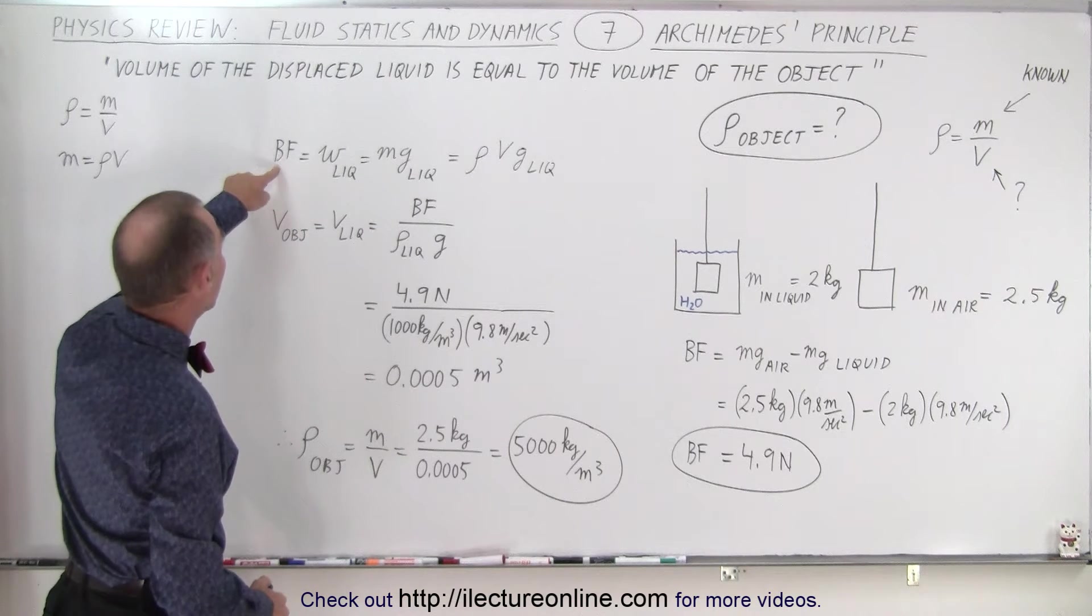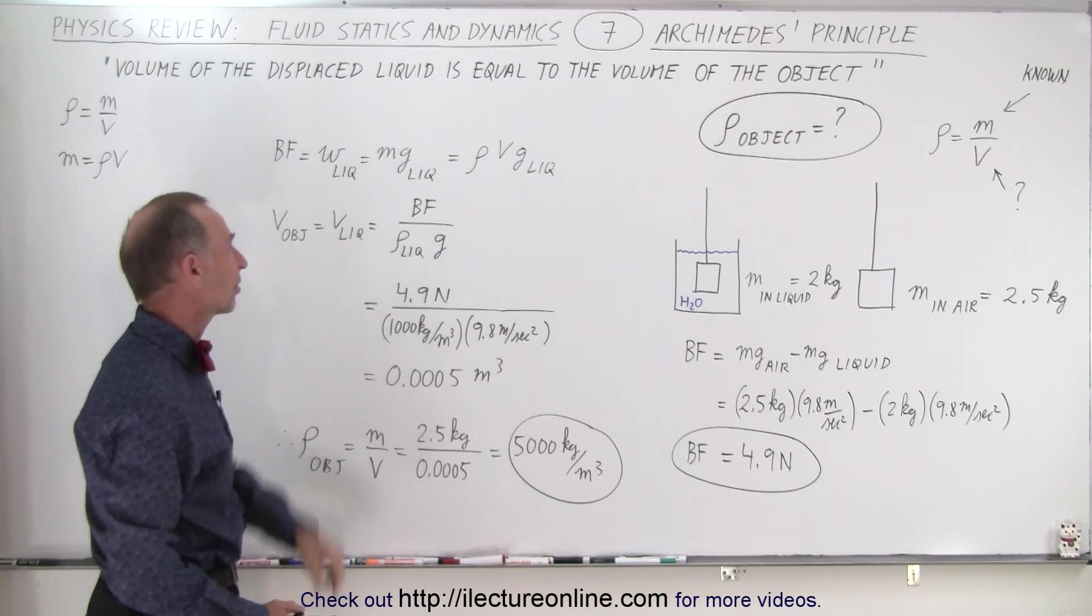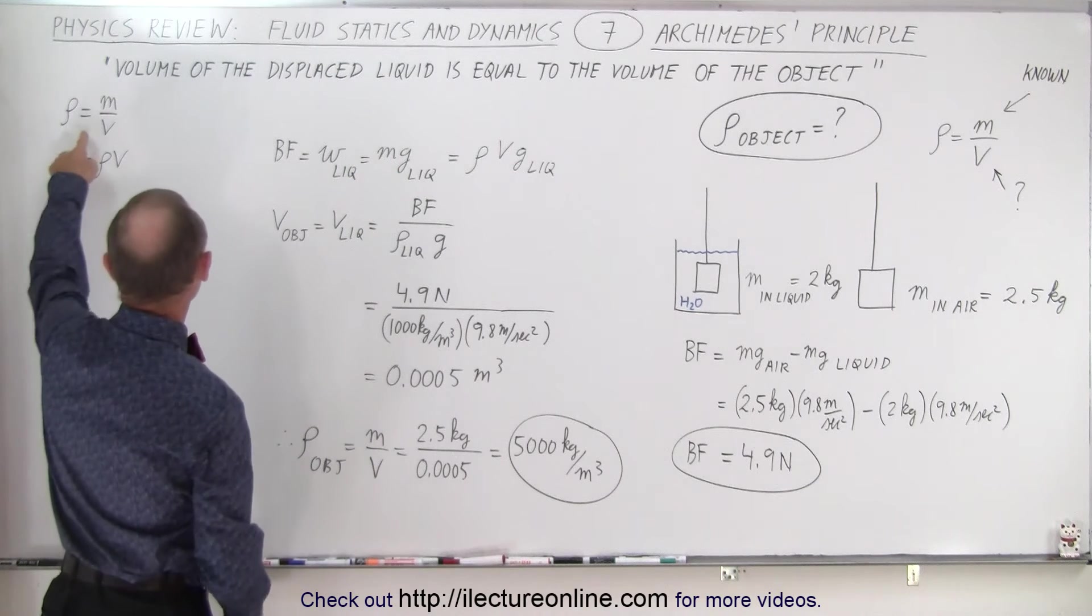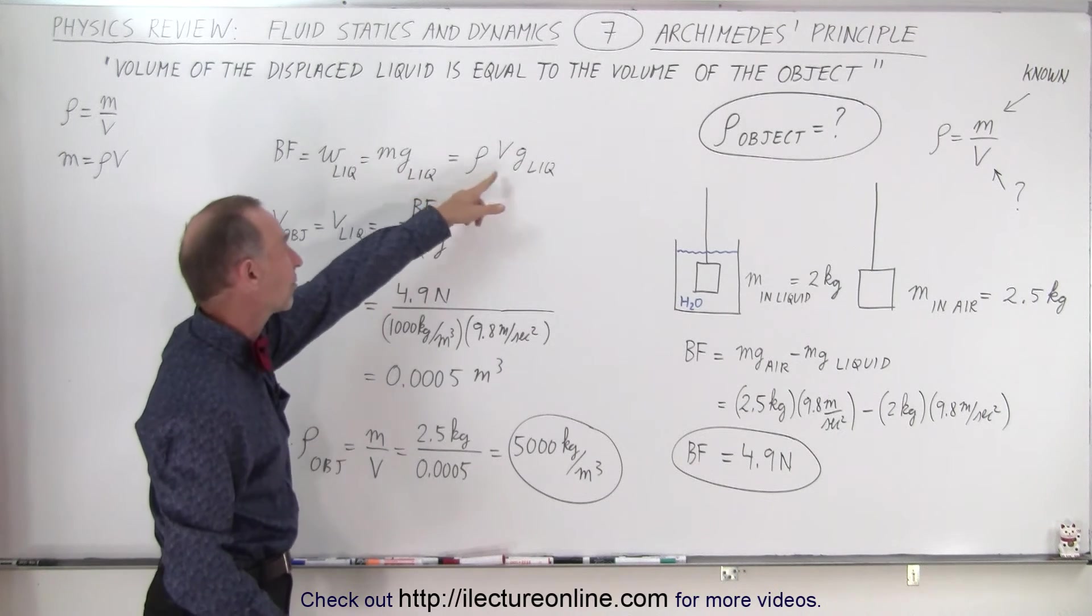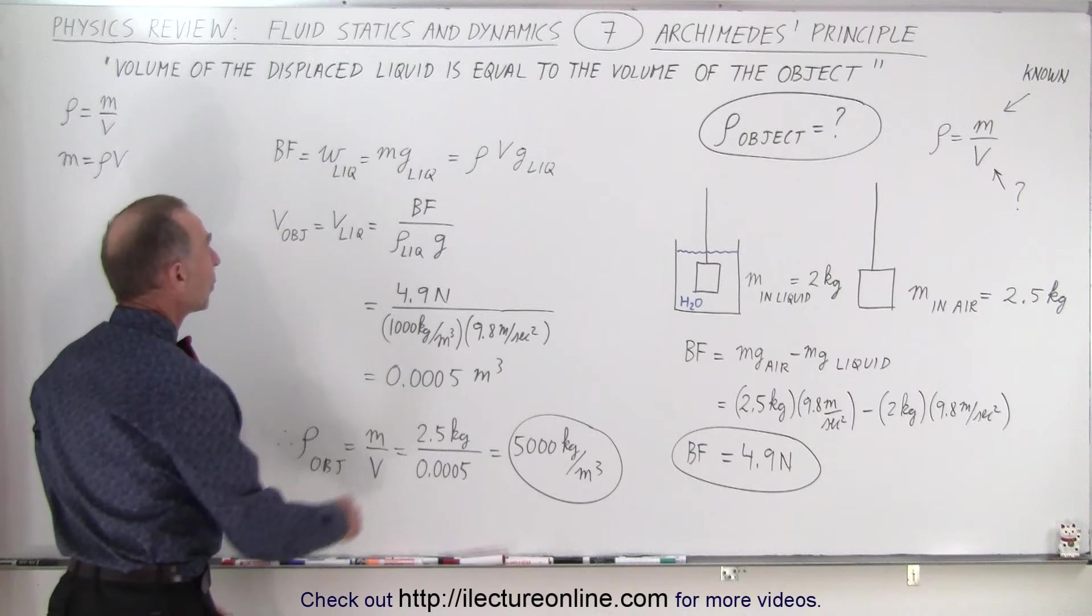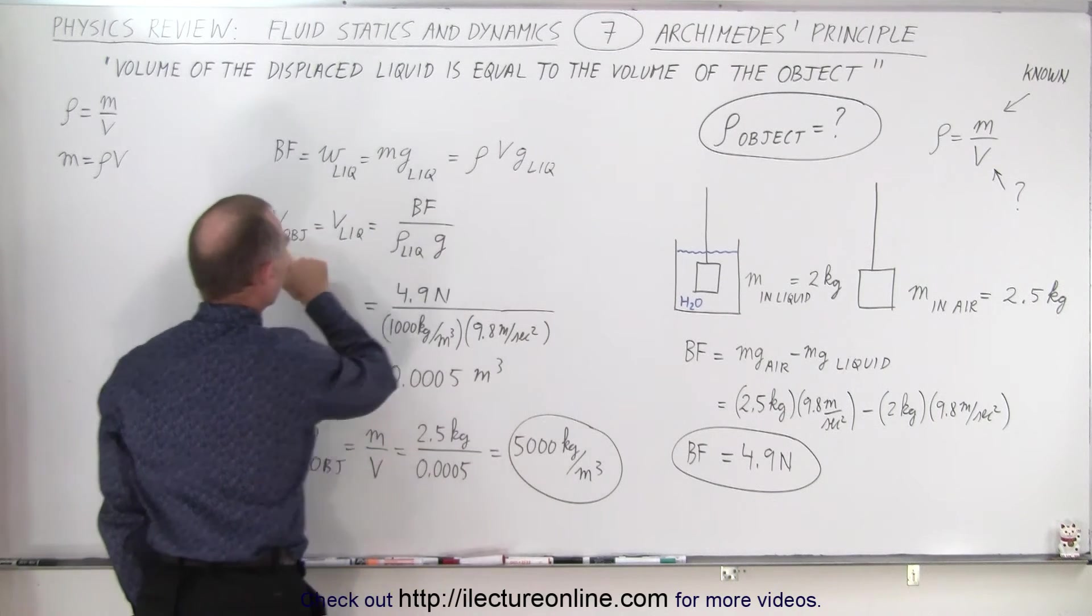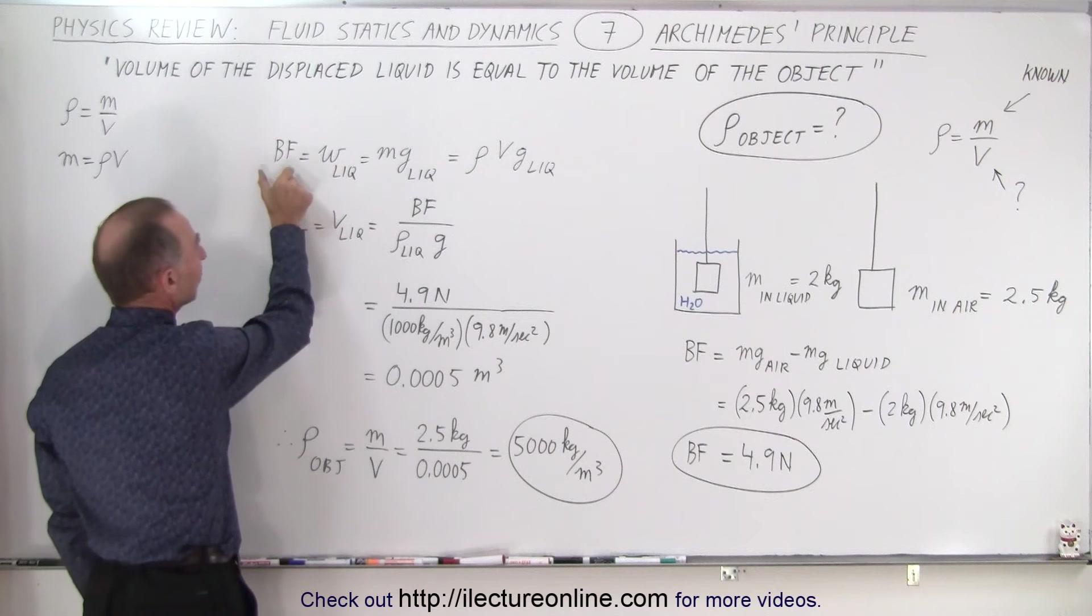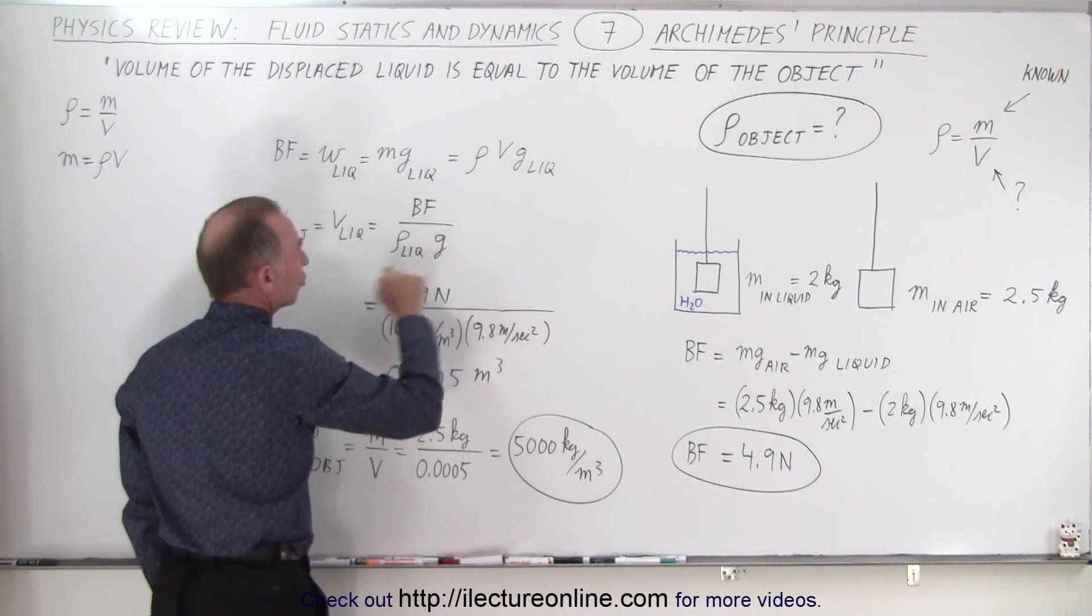Then we use the principle that the buoyancy force is equal to the weight of the displaced liquid, which is the mass times acceleration of gravity, and using this relationship between density, mass, and volume, we can replace mass by density times volume. Then we realize that the volume of the displaced liquid must equal the volume of the object, and so therefore, we can take the buoyancy force and divide it by the other two factors, density and g.